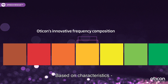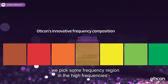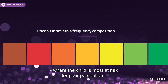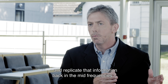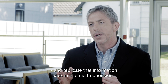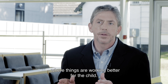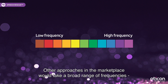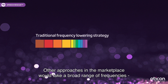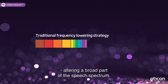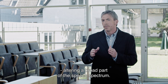Based on the characteristics of the child's hearing loss, we'll pick some frequency region in the high frequencies where the child is most at risk for poor perception and replicate that information back in the mid frequencies where things are working better for the child. Other approaches in the marketplace will take a broad range of frequencies and squeeze it down into the mid frequencies, altering a broad part of the speech spectrum.